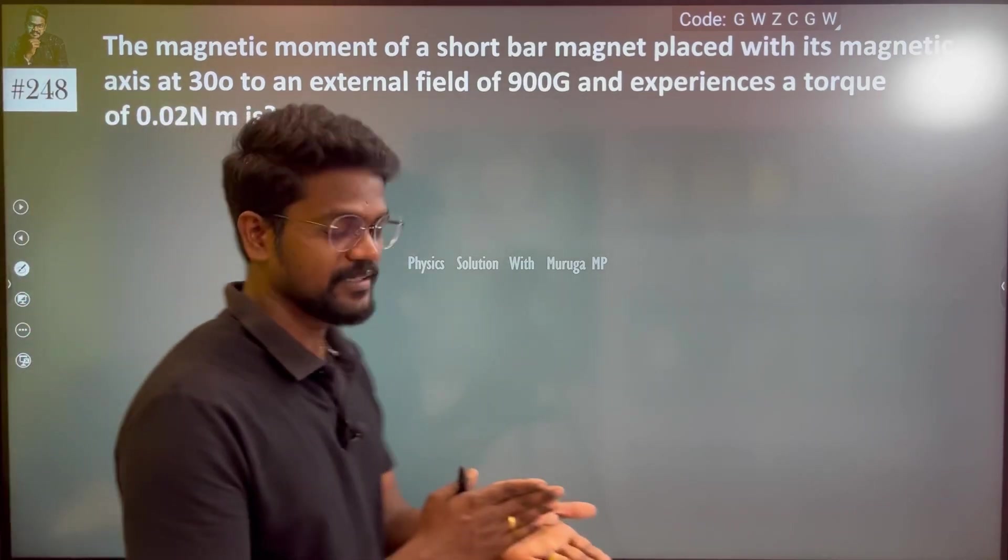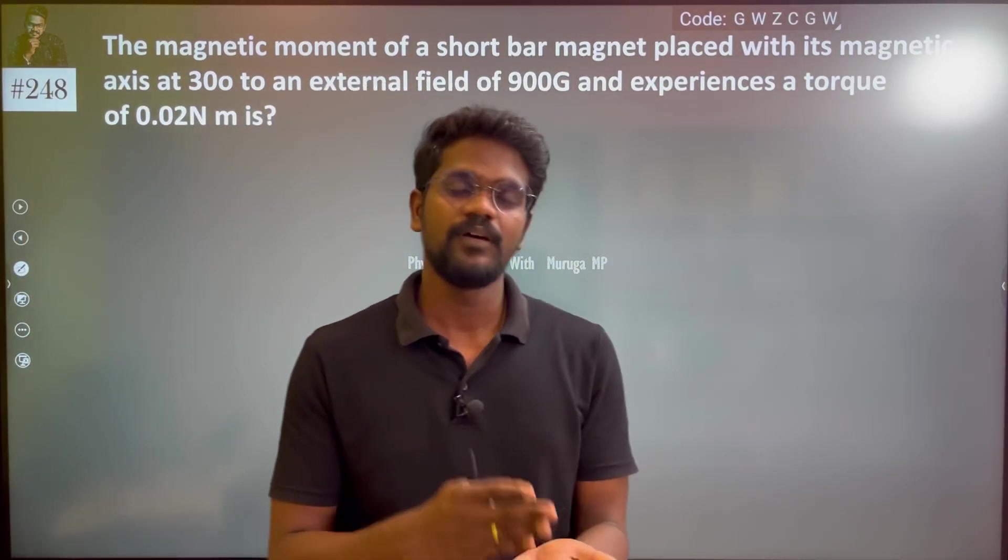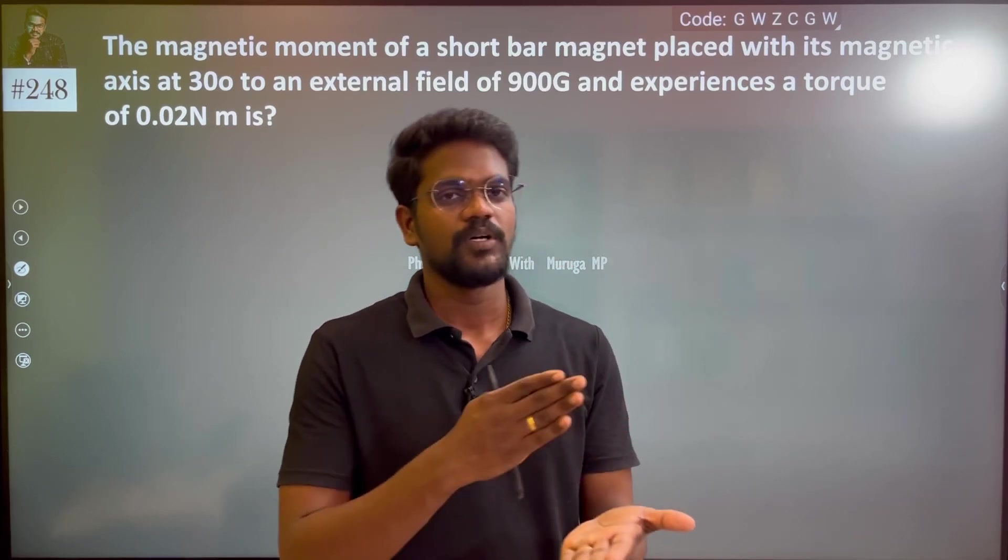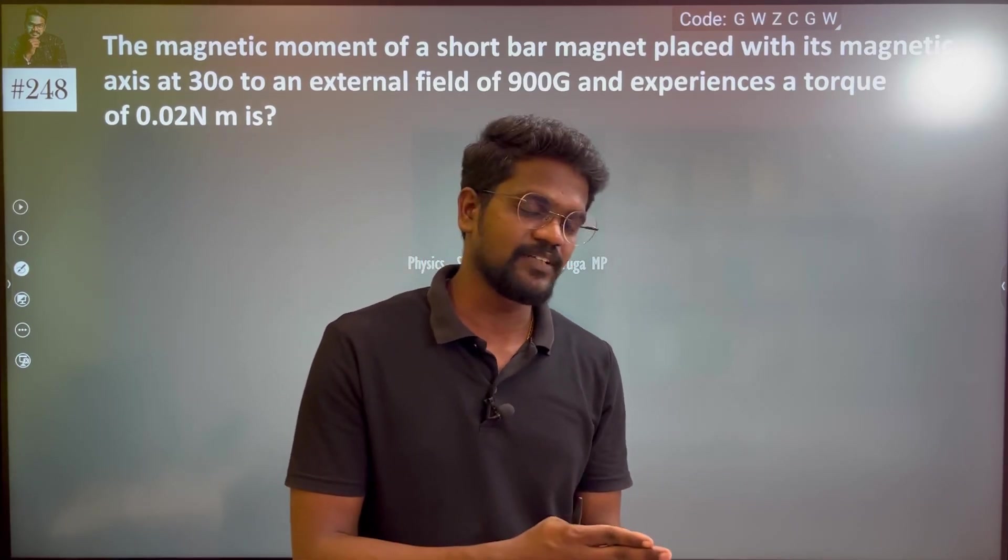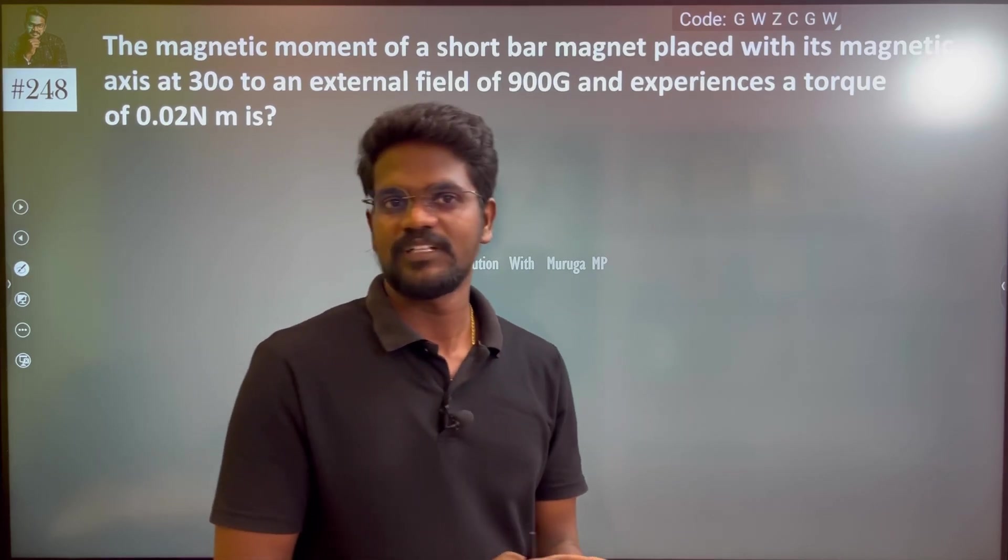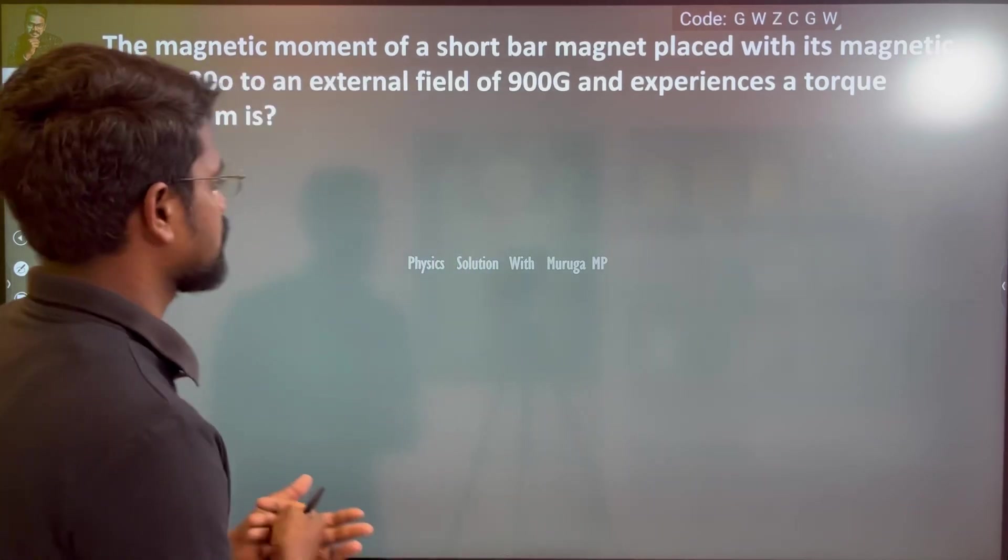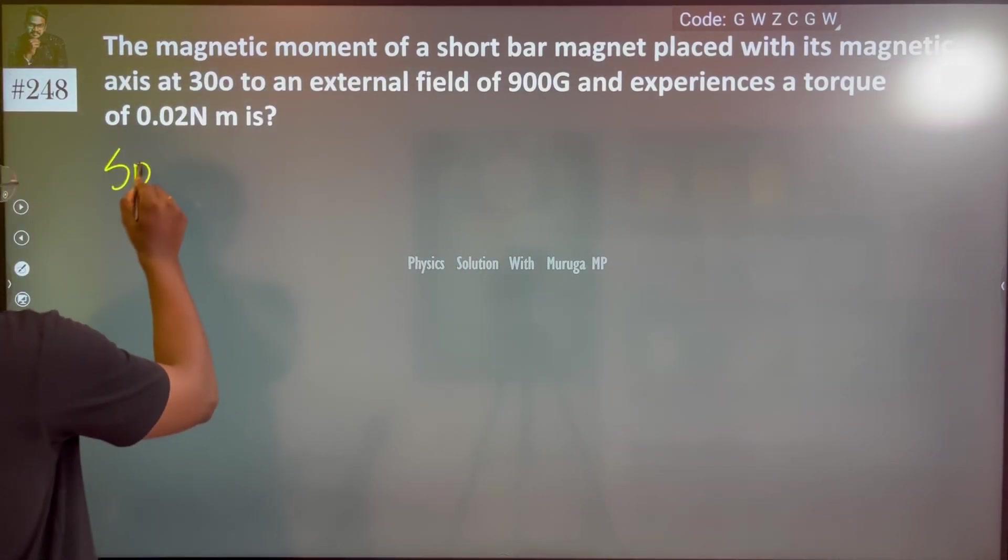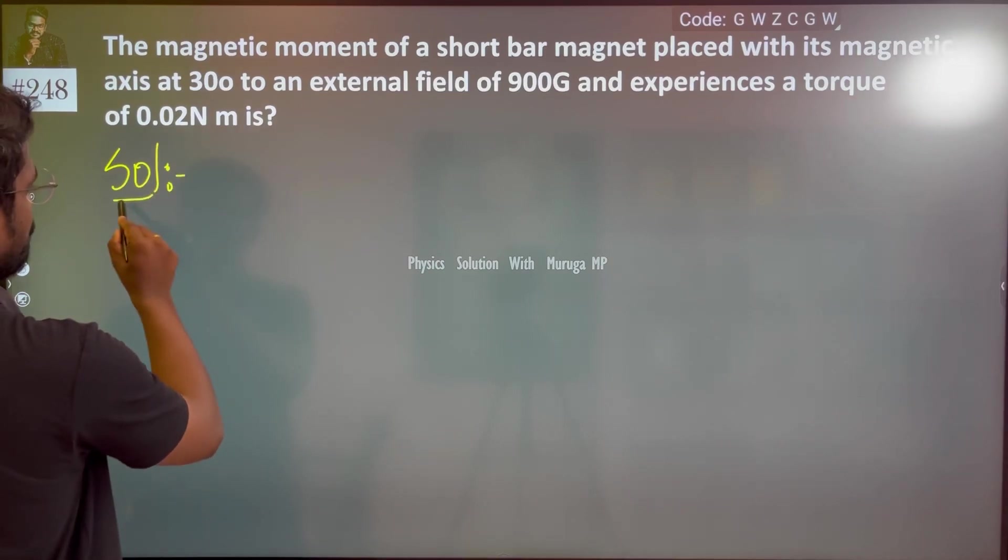For a magnetic dipole in a magnetic field that provides torque, we are going to find the magnetic moment M, and the angle is also given.